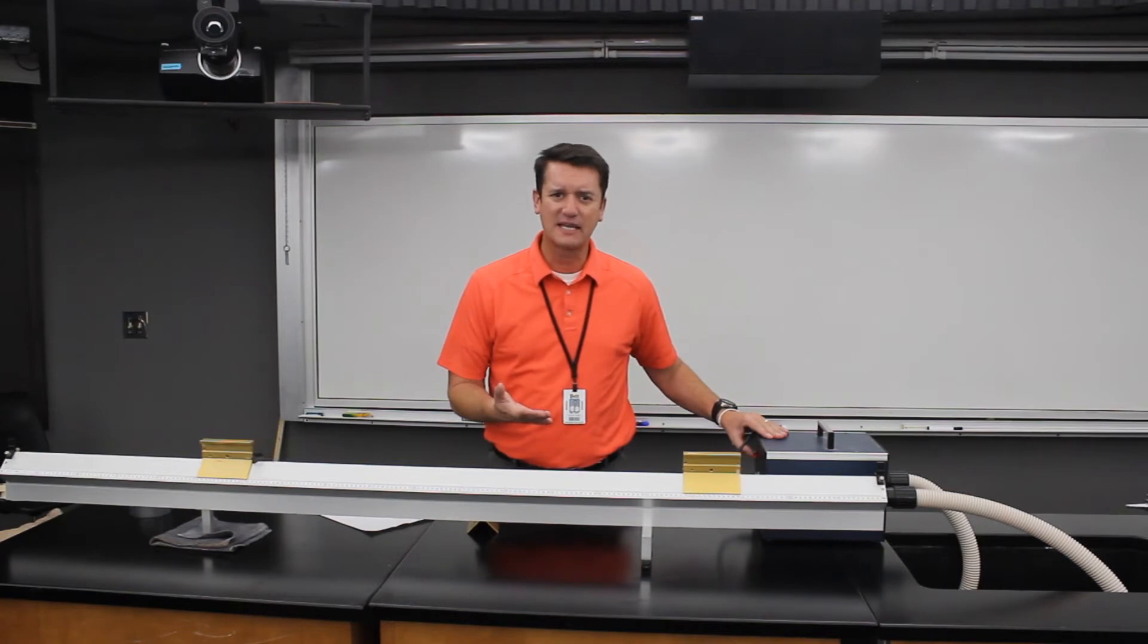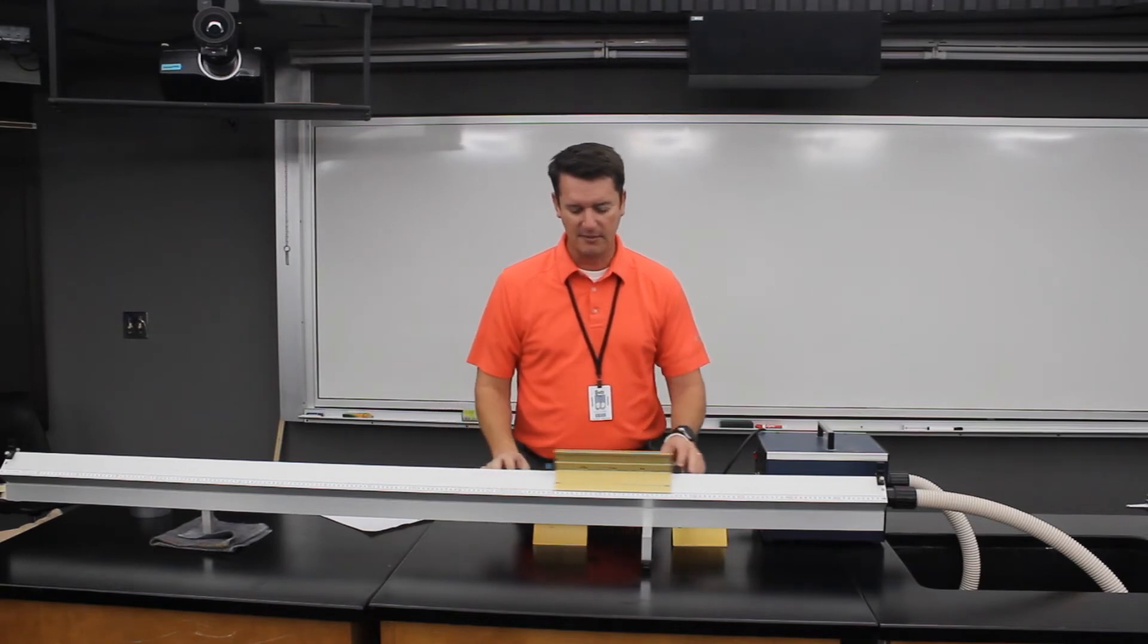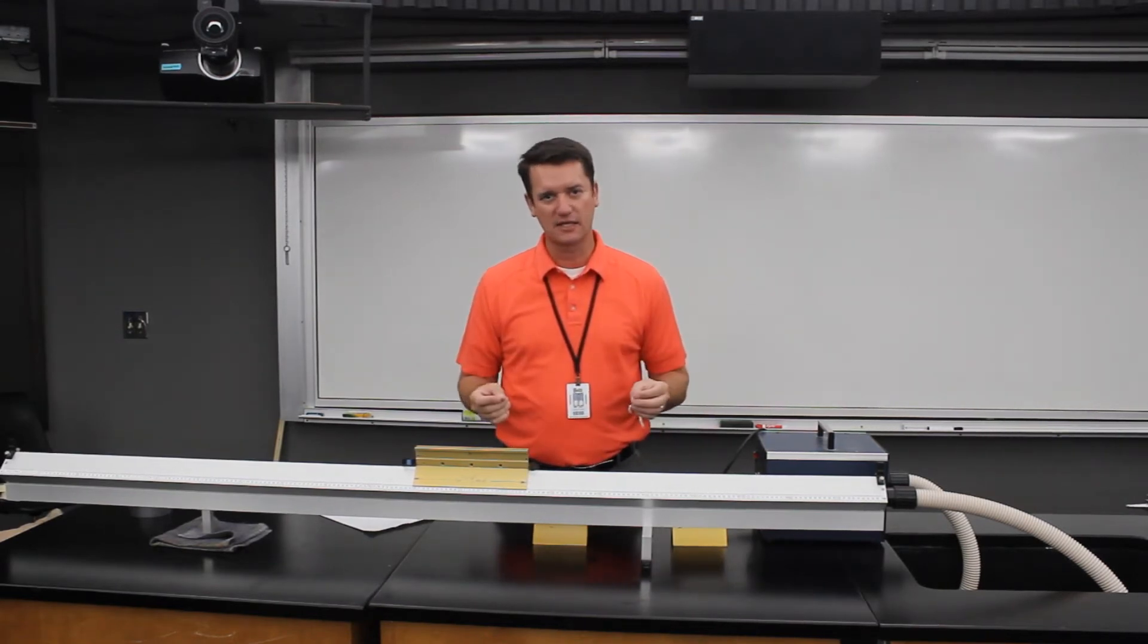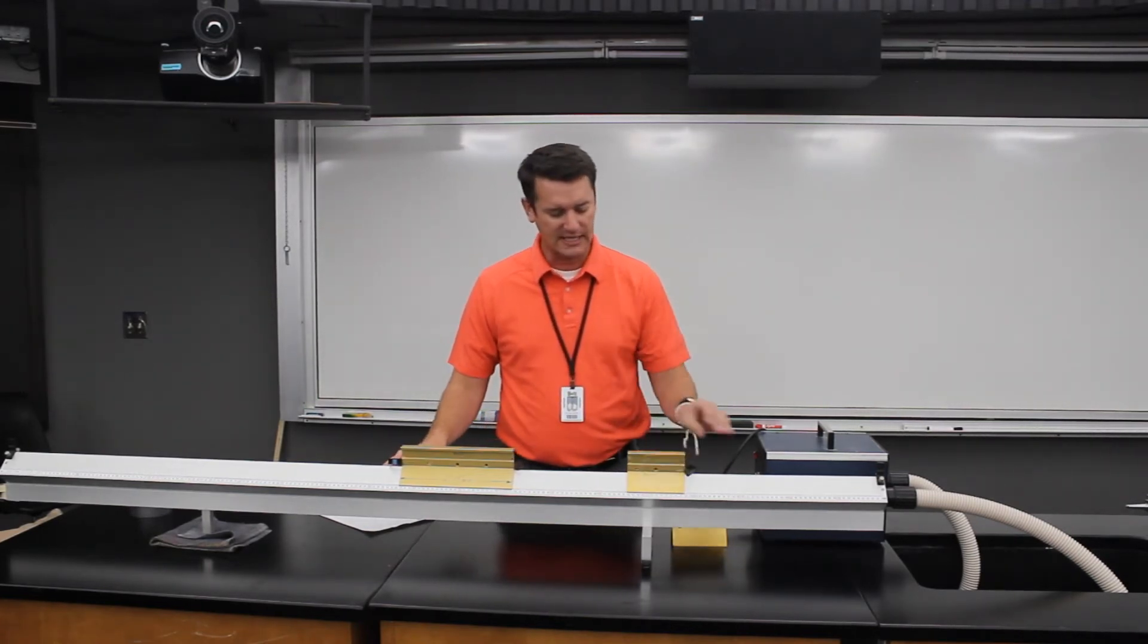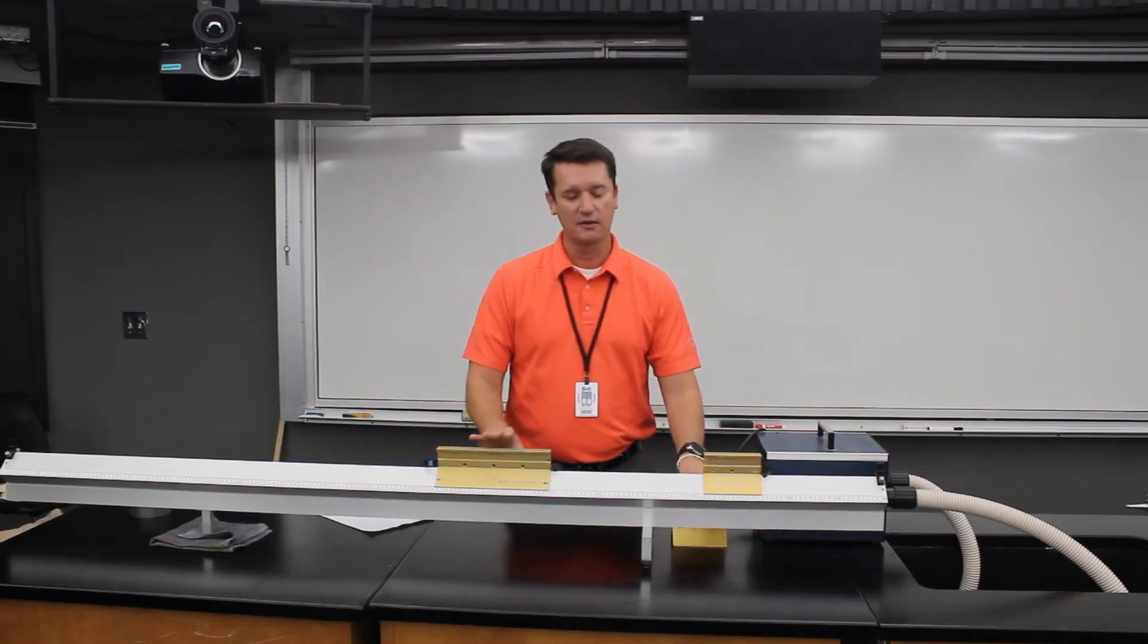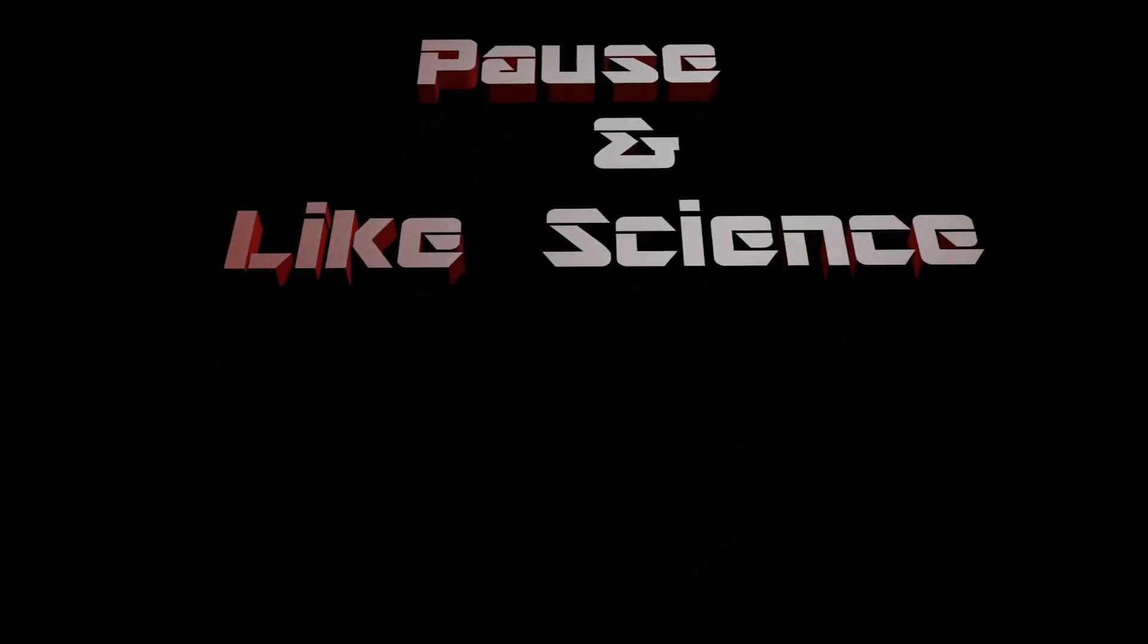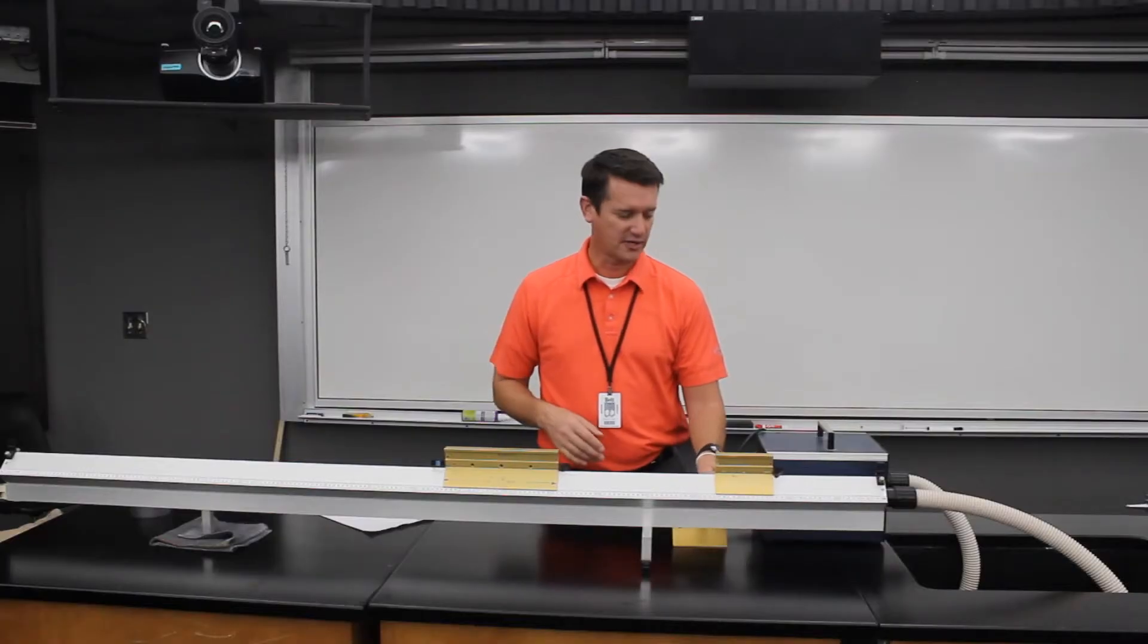But what happens if they're not the same size? Here, I've got a much larger car. This is about double the mass. And this mathematics is actually kind of hard in terms of determining what the velocities of these things will be after the collision. But we can just look kind of collectively or holistically or conceptually and see what we find happening. I'm going to keep this car stationary, and this car is going to move. What do you think is going to happen? Here we go.